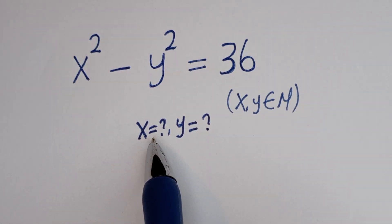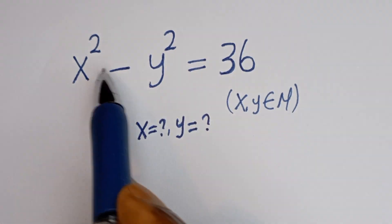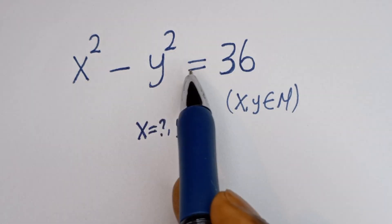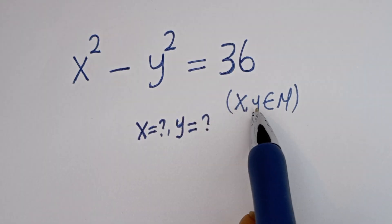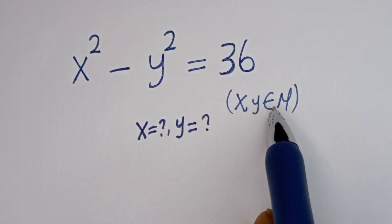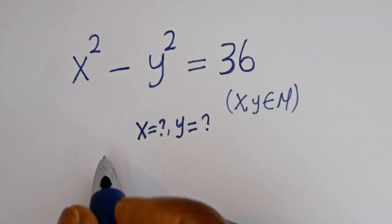Hello. How to solve for x and y in this equation: x squared minus y squared is equal to 36, where x and y are members of the natural number solution.